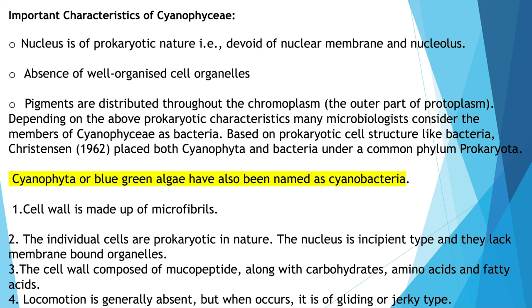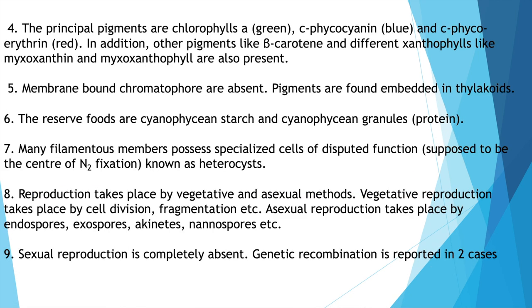Cyanobacteria has also been named Cyanobacteria. The cell wall is made up of microfibrils. Individual cells are prokaryotic in nature. The nucleus is of incipient type and they lack membrane-bound organelles. The cell wall is composed of mucopeptide along with carbohydrates, amino acids, and fatty acids. Locomotion is generally absent, but when it occurs, it is of gliding or jerky type. The principal pigments are chlorophyll A, C-phycocyanin, and C-phycoerythrin.